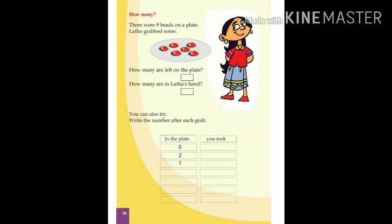Suppose in the plate there is only 2 beads. How many are in the plate? Count and tell — 7 beads are needed. So you want to write 7. Now you can see 1 in the plate — 1 bead. There will be 8 beads, then only the total becomes 9. So like this you want to write the other numbers: 3, 6, 7, 8. Write these numbers in the first column, and in the second column write how many beads you took.